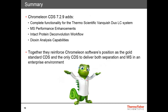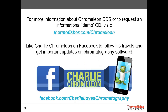So these are the new features in the Chromeleon 7.2.9 release, to highlight some of the major additions: complete functionality for the Thermo Scientific Vanquish Duo LC system, mass spec performance enhancements, intact protein deconvolution workflow, and dioxin analysis capabilities. Together, they reinforce Chromeleon software's position as the gold standard CDS and the only CDS to deliver both separation and mass spec in an enterprise environment. For more on Chromeleon, please visit thermofisher.com/Chromeleon, where you can download an app or order a CD with over 70 videos on the various features. Our mascot Charlie has his own Facebook page where you can connect, share, and follow his adventures as he travels the world — I would encourage you to connect with Charlie as we do post events and tips and tricks there. Thank you for listening, and goodbye for now.